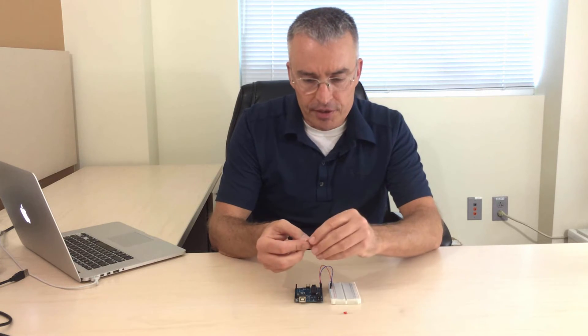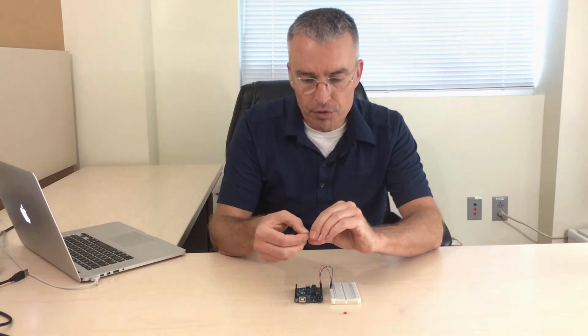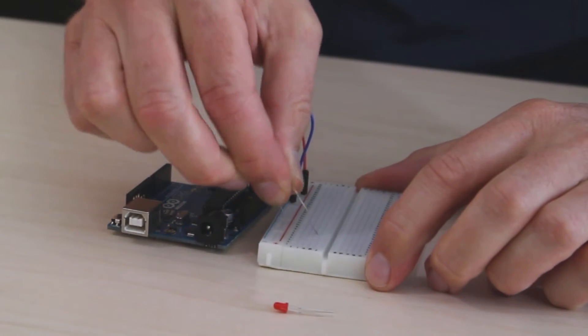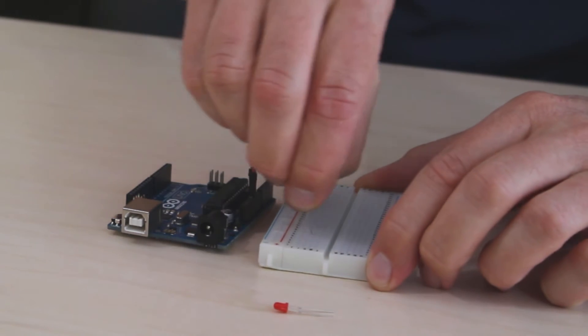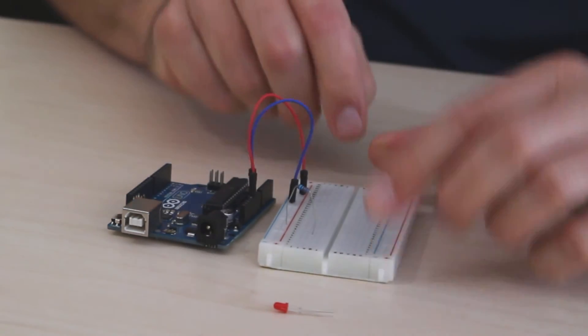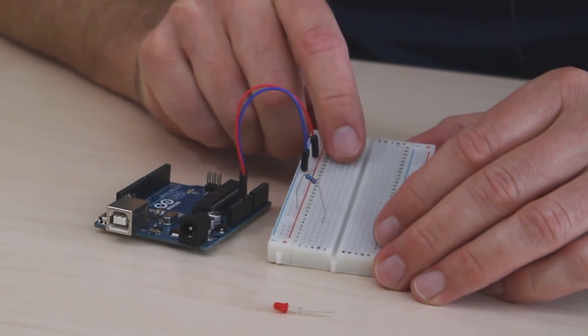So if we want to hook up the LED, what we do first is to connect the resistor to the red power rail. And then we put the other end of the resistor into one of those contact points in the center of the breadboard.